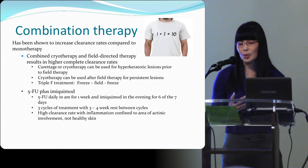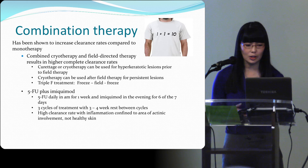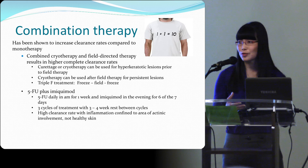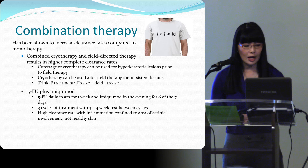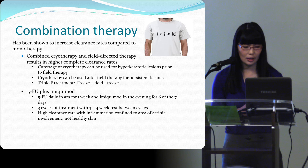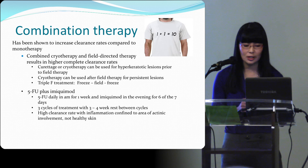Combination therapy should be considered — one plus one equals ten. Consider combined cryotherapy and field therapy: do curettage or cryotherapy for really hyperkeratotic lesions prior to field therapy, then see them three months later and spray any persistent lesions — called 'triple F': freeze, field, freeze. Studies have also been done on 5-FU plus imiquimod: 5-FU daily in the morning and imiquimod in the evening for six of seven days, doing three cycles with three to four week rest periods between cycles, achieving high clearance rates confined to areas of actinic involvement.